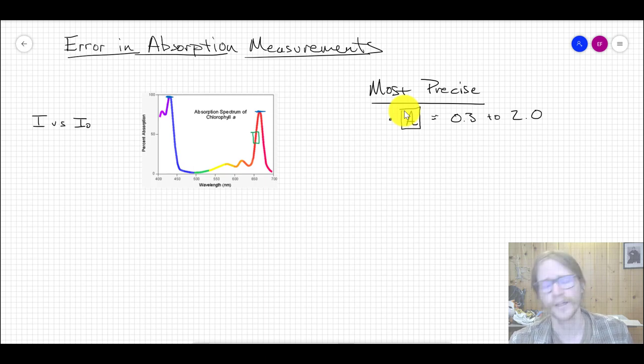And then on the high end, we're actually transmitting very little. Beyond 2, an absorbance of 2, you're permitting less than 1% of the light to hit the detector. And so this range becomes the most reproducible range that we can measure over.